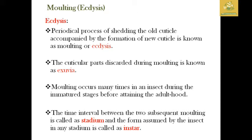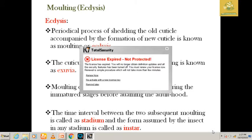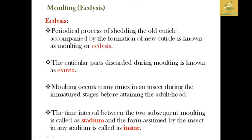These are the key words we must remember: ecdysis, which is the process of shedding the old cuticle and forming a new cuticle; exuvia, the discarded cuticular part; stadium, the time interval between two moultings; and instar, the form obtained by the insect after any stadium.